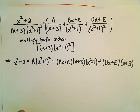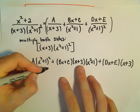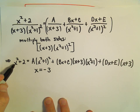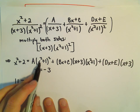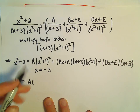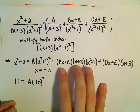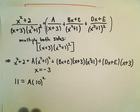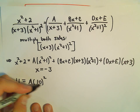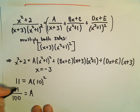Now we figure out our constants. I'll plug in x equals negative 3 to eliminate the linear terms. On the left, negative 3 squared is 9 plus 2 equals 11. On the right, we get negative 3 squared plus 1, which is 10 squared equals 100. The middle and last terms become zero. So we have 11 equals 100A, giving us A equals 11 over 100.